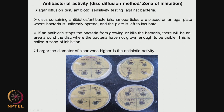Larger the diameter of the clear zone, the higher the antibiotic activity; smaller the diameter of the zone, the lower the antibiotic activity. We take an agar plate, spread bacteria all over, place a disc containing the antibiotic or antibacterial material or nanoparticle, then incubate the whole plate for 24 hours, and see whether a clear zone is produced. A clear zone indicates the bacteria has not grown near that disc because of the antibiotic's action. This is a very simple and fast way of checking antibacterial surfaces, called the disc diffusion method or zone of inhibition method.